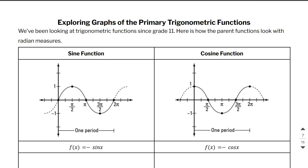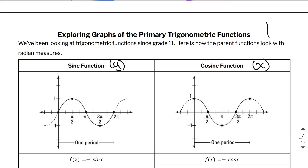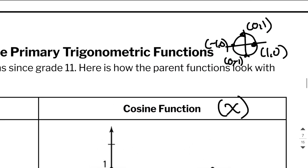Don't forget that in the unit circle, sine is y and cosine is x. Also remember on the unit circle these coordinates are going to be (1, 0), (0, 1), (-1, 0), and (0, -1). Now that we are looking at radians, we know that this is going to be 0, this is π/2, this is π, and then this is 3π/2.